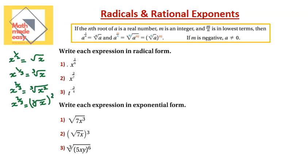Now, if m is negative, then a does not equal 0. Why? Because a negative exponent means it goes to the denominator, and if a equals 0, the whole thing will be undefined. We will see what we mean by that as we solve the examples.